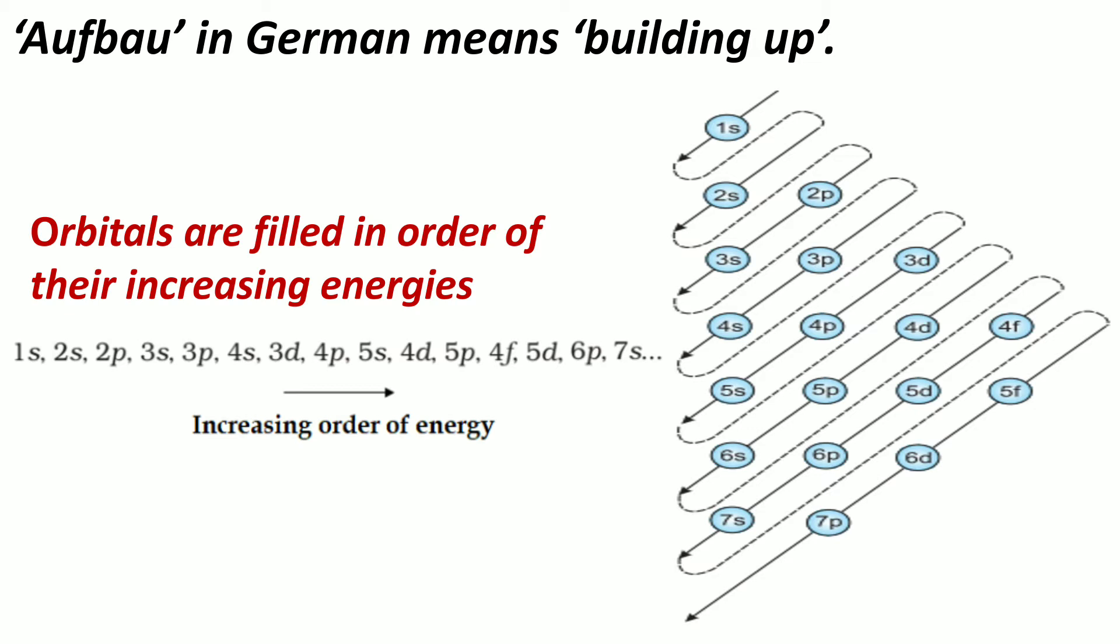Aufbau, the word in German means building up. The building up of orbitals means the filling up of orbitals with electrons. This principle states that in the ground state of the atoms, the orbitals are filled in order of their increasing energies.